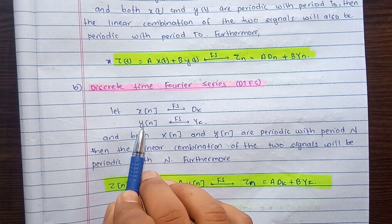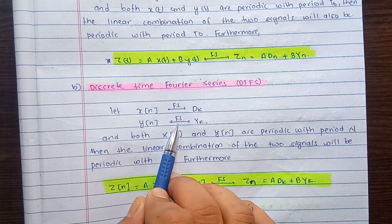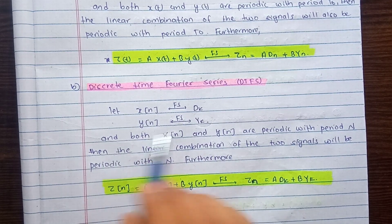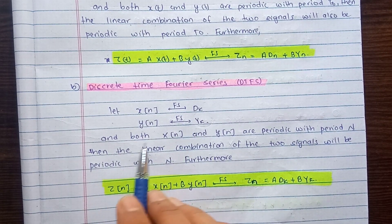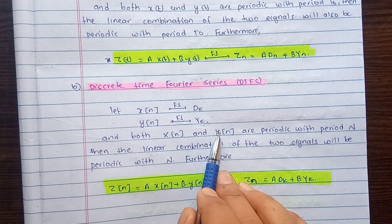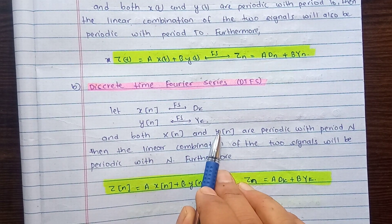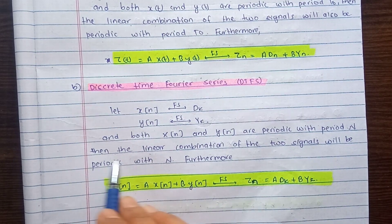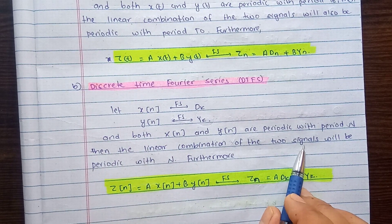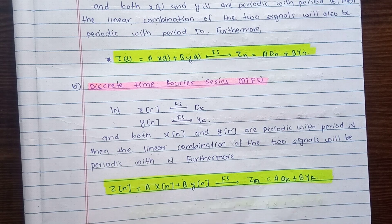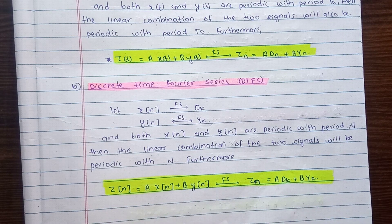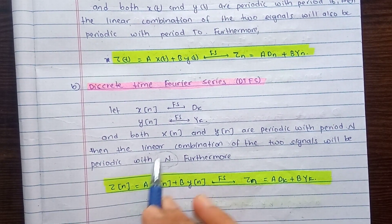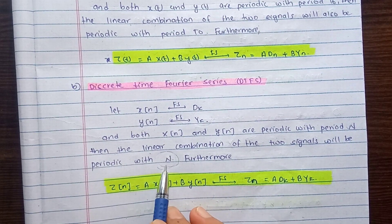If Yt has output Yn as its Fourier Series representation, then Xn and Yn are both periodic in n with the same sampling period. If they form a linear combination, the output is also periodic with that same period.